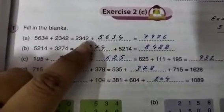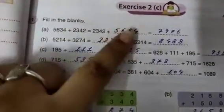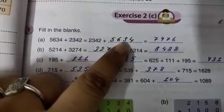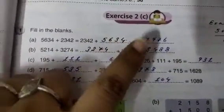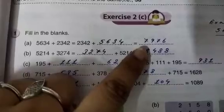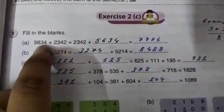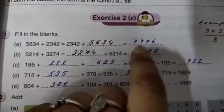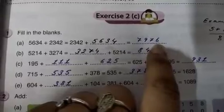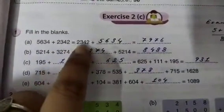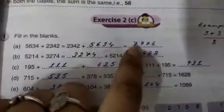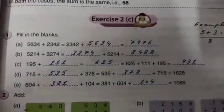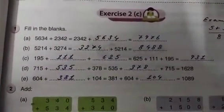2,342 plus dash. That means this will go there. And then, if you add up and see, you will get 7,976. 5,634 plus 2,342 will give you 7,976. And at the same time, if you write this at first and this after that, then also you will get the same answer, 7,976. This is the thing. Nothing else. If you understand this, you will be able to do all the other sums. The same thing are there.